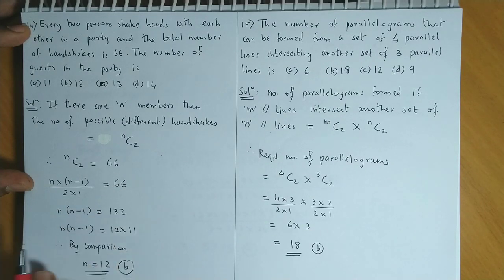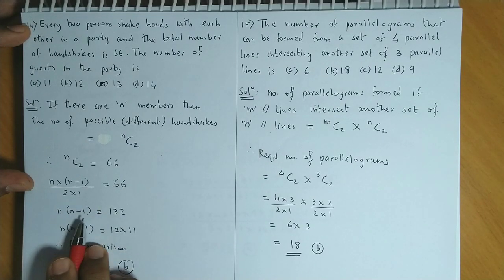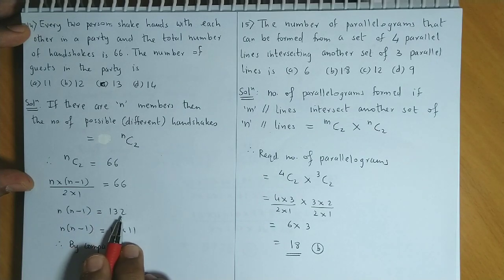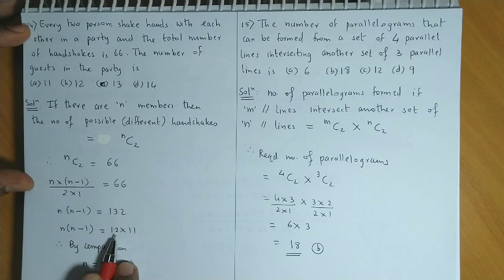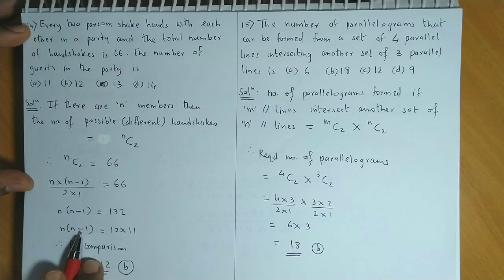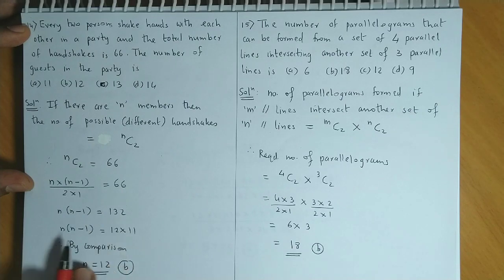If we simplify this, we have n into (n minus 1) is equal to 132. Now 132 is equal to 12 into 11.